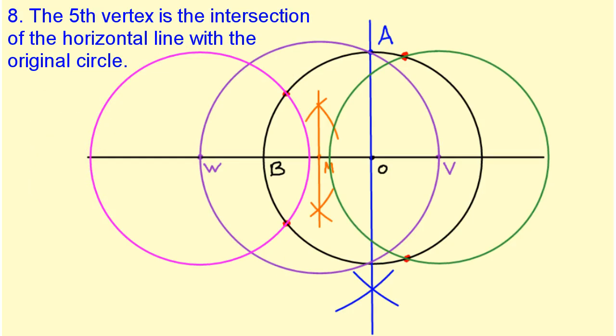The fifth vertex is the intersection of the horizontal line with the original circle here.